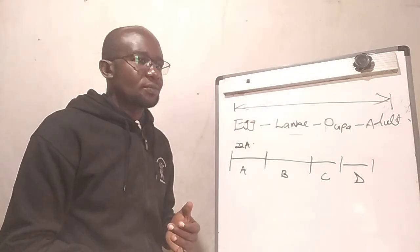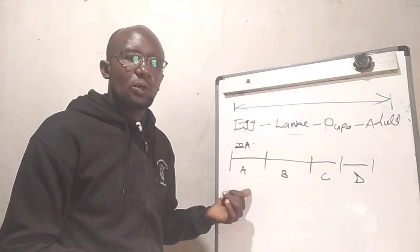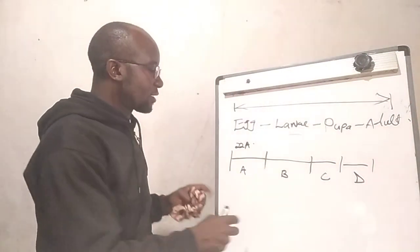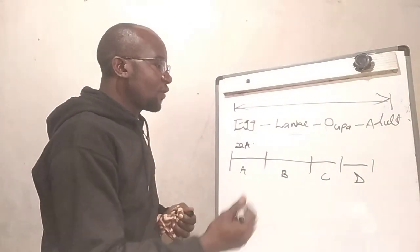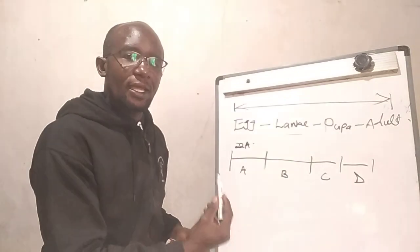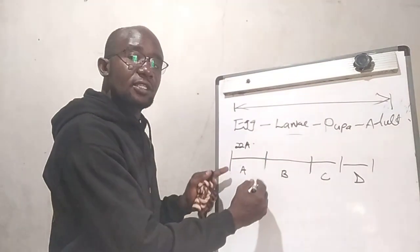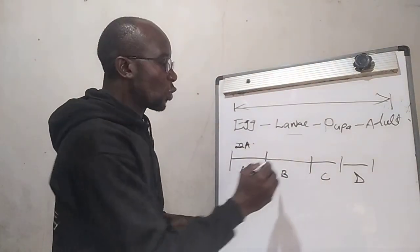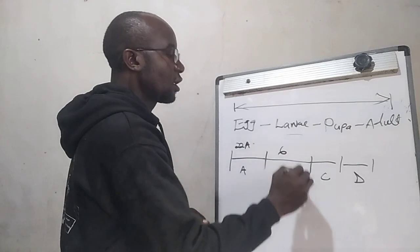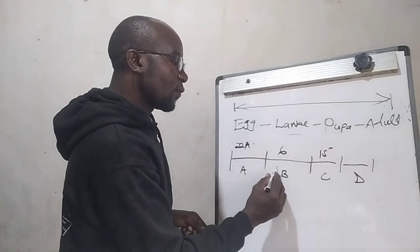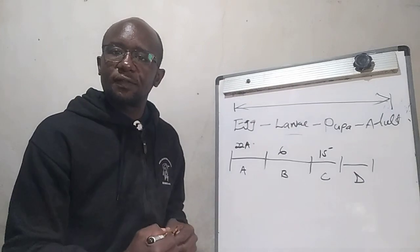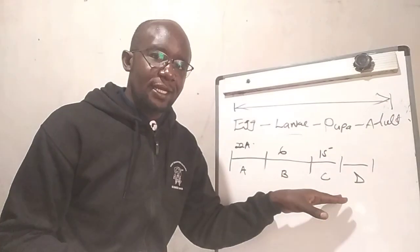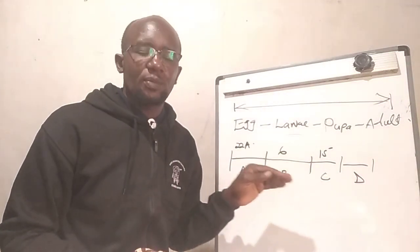When you're spraying this pesticide that is in group 22A, then it means that you will not spray pesticide within this group for the next 60 days. You will use a different group, say group 6 or group 15, for these consecutive generations. For generation B and C, you will alternate different active ingredients with different mode of action.